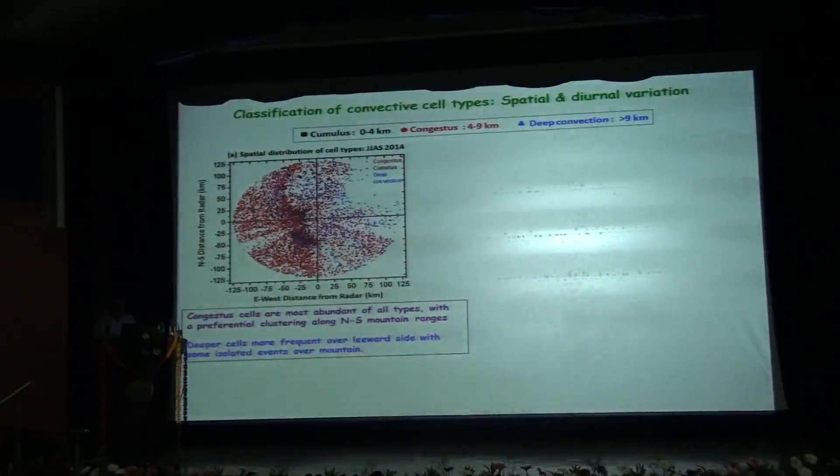We classify the convective cells based on their top heights following the range height criteria of Johnson and Houze. The cumulus clouds, 0 to 4 km, indicated by the black square. The congestus, 4 to 9 km, indicated by the red circles. And the deep convection, greater than 9 km, indicated by the blue triangles. So this is a spatial distribution of different cloud types. We see an ocean of red, that is the congestus cells are more abundant of all the cell types with a preferential clustering of the shallower cells along the north-south mountain ranges. Deeper cells are most frequent over the leeward side of the region with some isolated events over the mountains.